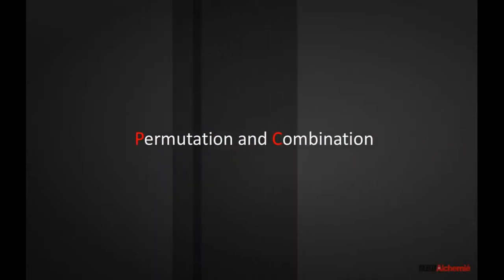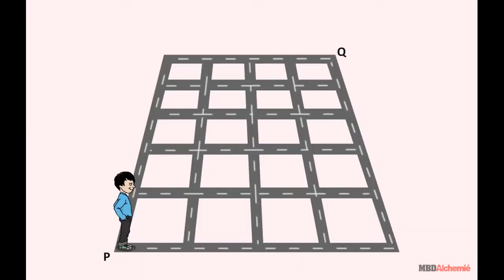Permutation and Combination. Let's try to understand the problem properly. A man is standing at point P. He wants to reach point Q.